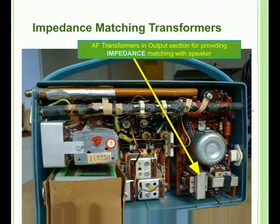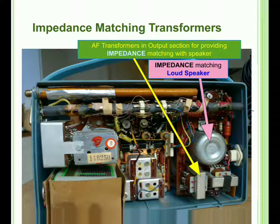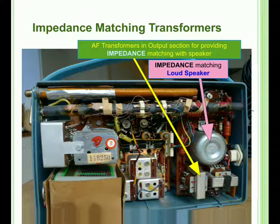In the radio receiver, the final stage uses an AF transformer that couples the amplified audio signal from the audio amplifier to the loudspeaker. The transformer indicated by the yellow arrow is an AF transformer achieving impedance matching — matching 8 ohms with the loudspeaker impedance. This is the final stage of the audio section of the radio receiver.